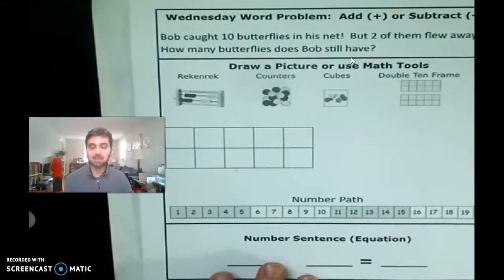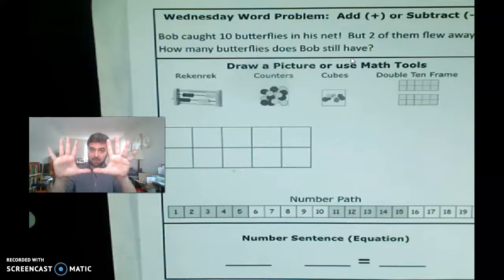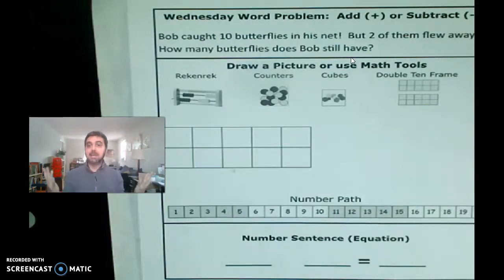Okay, so this does relate to tens partners, but now we're not doing addition, right? Because two of them, we have 10, right? Two of them flew, how do I do that? Two of them flew away. So that means two of them are gone, left. How many do we have left? How many butterflies does Bob have left? All right, so this is one of those times when it is very important for you to stop the video and do your work and see what you get. Okay, see if you can figure out how many butterflies Bob still has. Draw a picture, use a manipulative, write your number sentence. Okay, and when you're done with that, come on back to the video. Hit play and we'll continue. All right, see you soon.